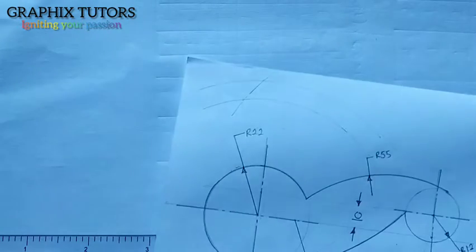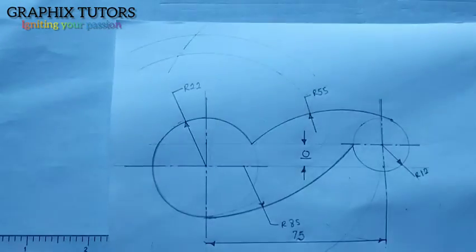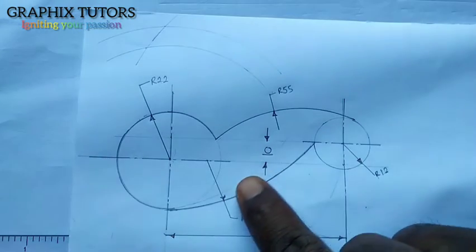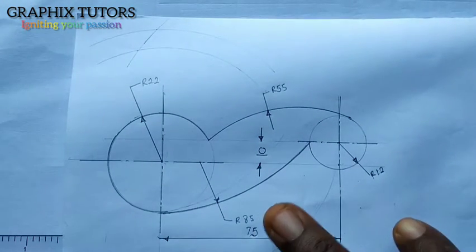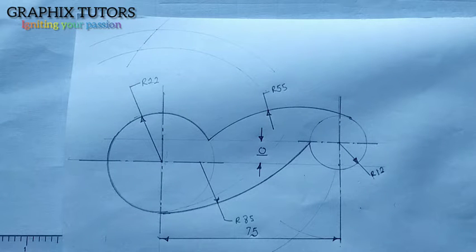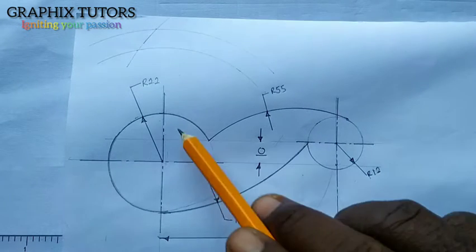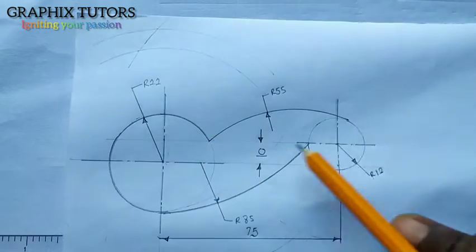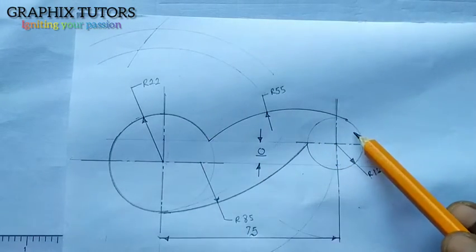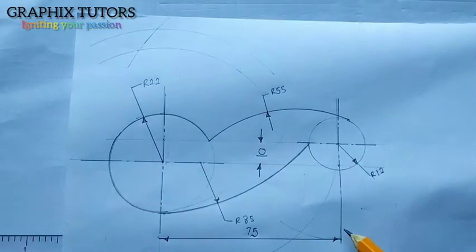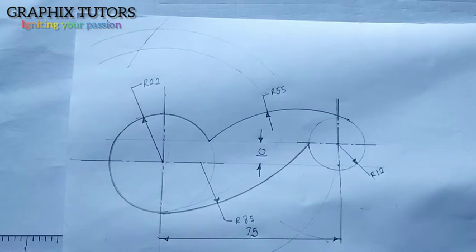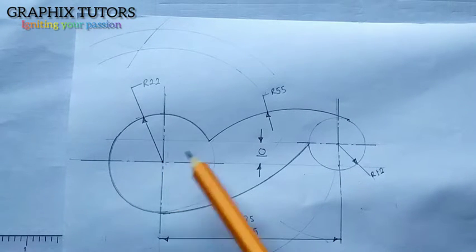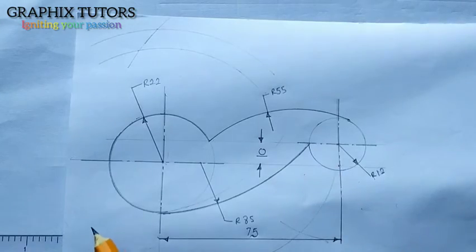What we are trying to do today is replicate this diagram. The first thing you do when you see a question like this is to indicate the two circles — we have one here and another one here. The distance between both of them is 75. So the first thing I will do is draw a straight line and measure 75.